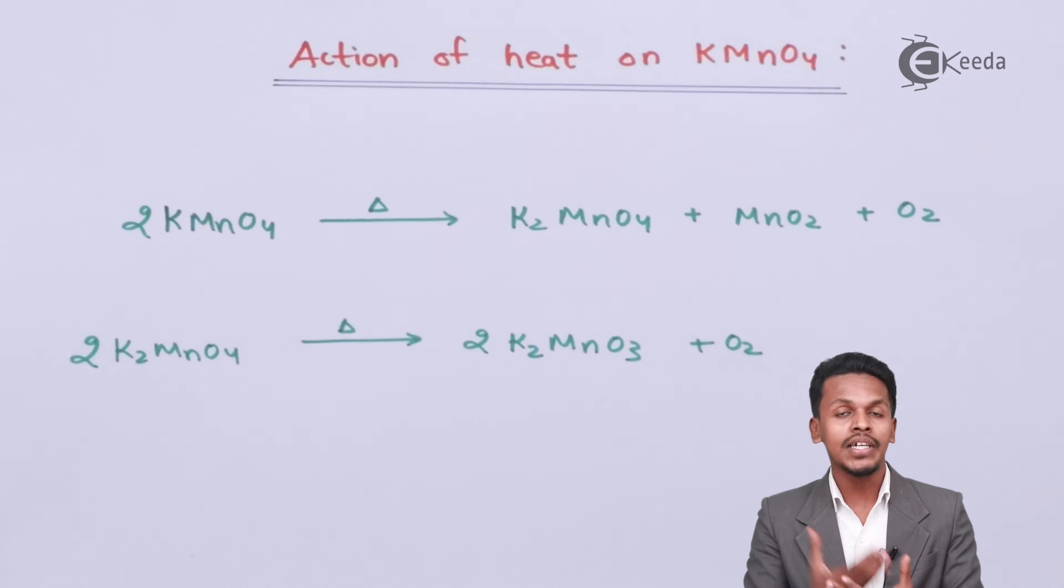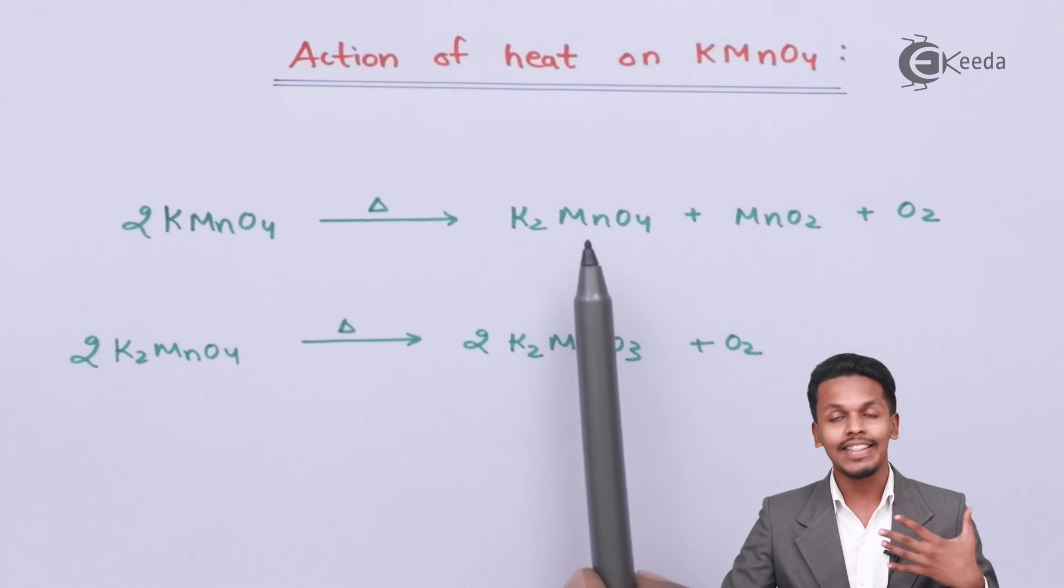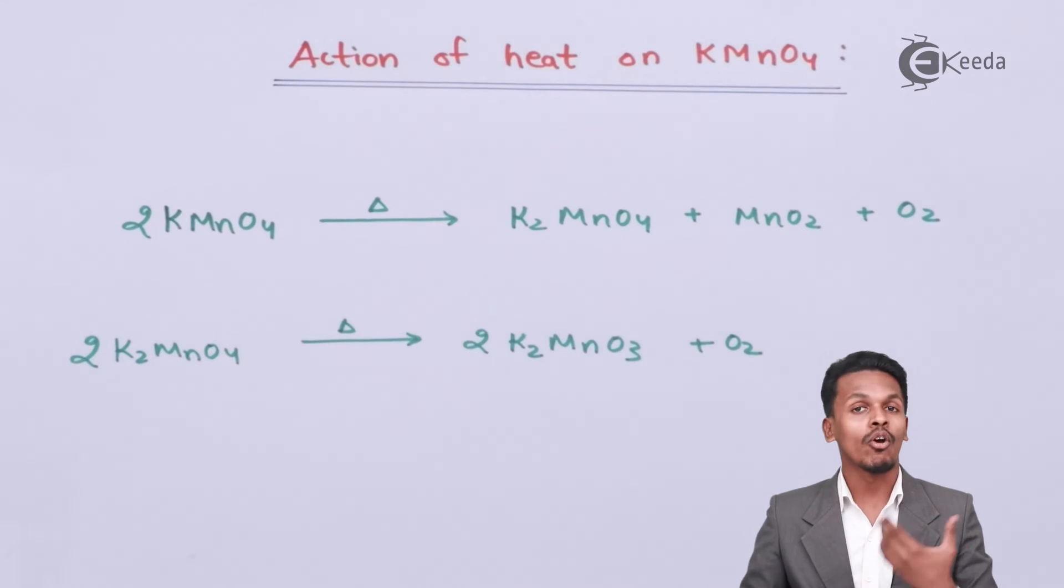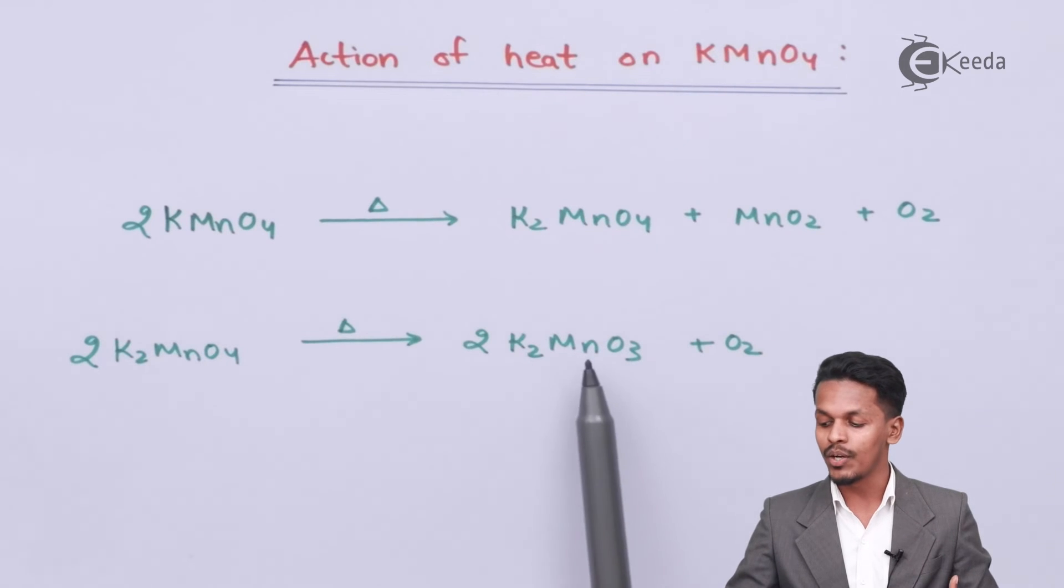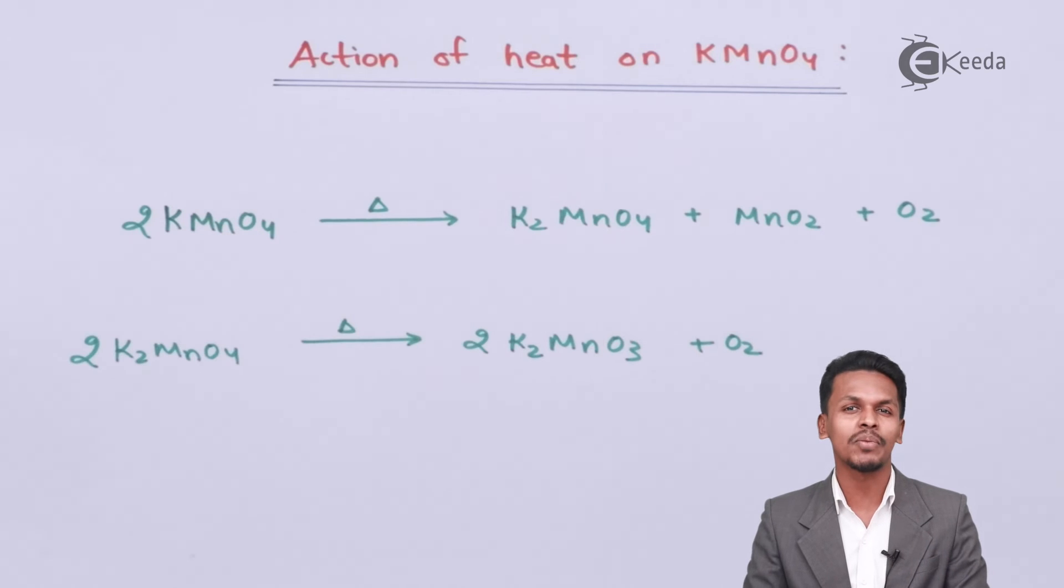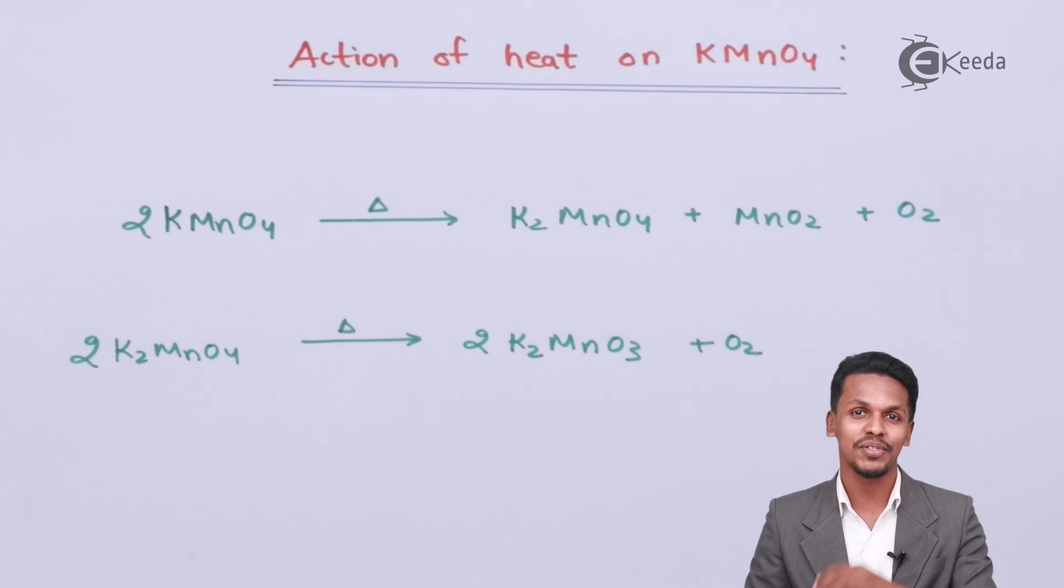On the further decomposition of K-MnO4 we can get potassium manganate, and on further decomposition of potassium manganate we get K2MnO3. This was a small concept related to the decomposition of K-MnO4. Thank you friends for watching this video, I hope you understood clearly. I'll see you next time, don't forget to subscribe. Thank you so much.